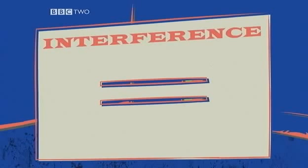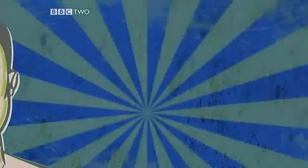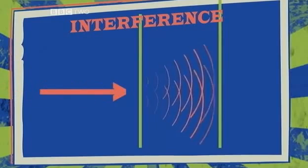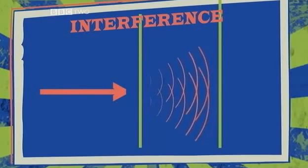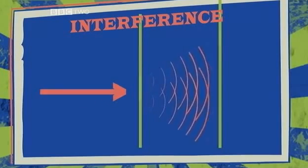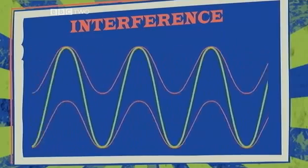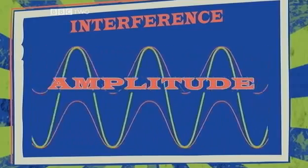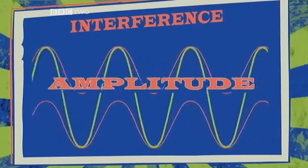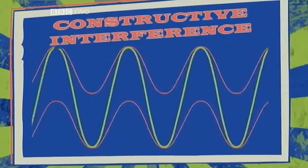Namely, we get interference — the fourth of the wave effects we're going to look at. Light waves from the two slits meet where they hit the screen. If they arrive in perfect synchronisation, the peaks add up to make even bigger peaks, so they merge into a wave with greater amplitude. That's called constructive interference.